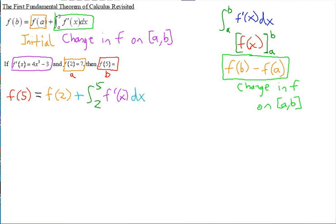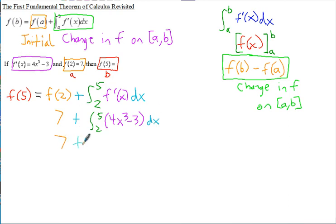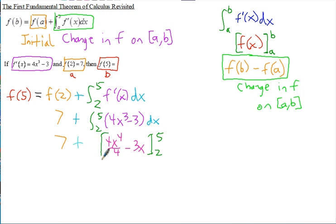So f of 2 we can put in as 7, plus the integral from 2 to 5. Then we can put in our specific equation for the derivative, which is 4x³ minus 3. When you integrate this, the 4 and x³ give x to the 4th over 4, and integrating 3 gives 3x, evaluated from 2 to 5. We'll turn those into brackets, and notice the 4s reduce out, so all we're left with is x to the 4th minus 3x.